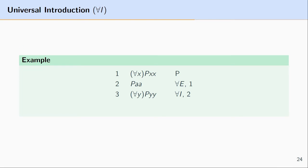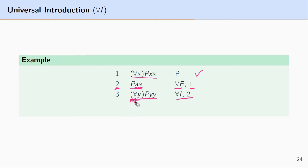Here is an example where universal introduction is used correctly. At line one we have a premise: for all x, Pxx. At line two we reason to PAA using universal elimination on line one. Then at line three we apply universal introduction to PAA. Since A could have been B, C, D, or any name referring to every object in the domain, this is acceptable. A does not occur in any premise or assumption in an active sub proof, and A is not found in the resulting formula at line three.